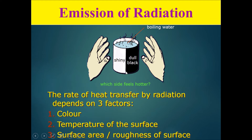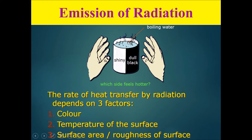One example is: if you have a can and you paint one side to be shiny and the other side to be dull — dull means a rough surface — and you put boiling water into the can, then place your hands at equal distances from the can, the hand near the dull black side would feel hotter.